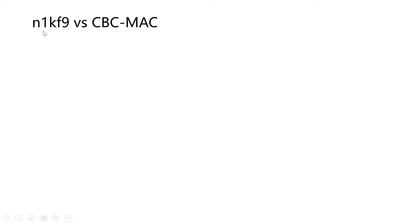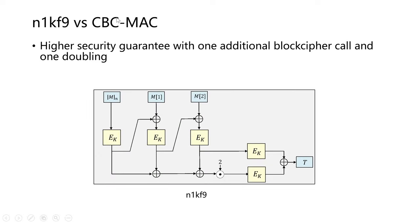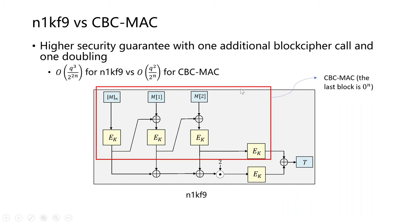Now comparing n1kf9 with CBC-MAC, it also provides a higher security guarantee with only one additional block cipher call and one doubling. Similarly, the top part can be regarded as CBC-MAC where the last block is always zero.